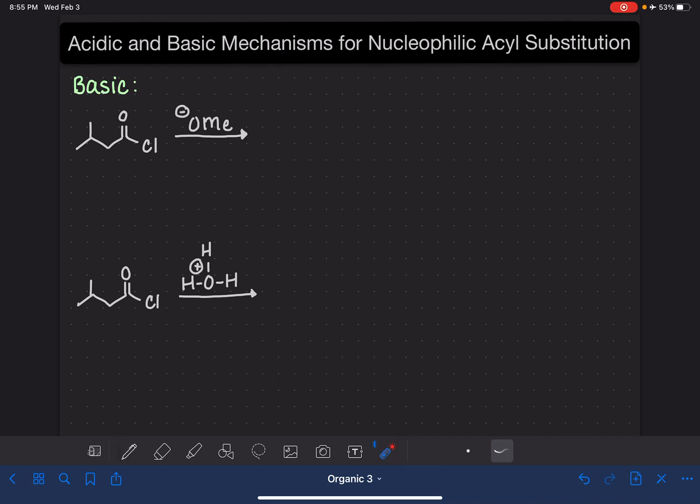For the basic mechanism, I'm going to be using an acid chloride as my example, and the basic nucleophile that we're going to use is the methoxide ion. Whenever we have a basic nucleophile, the nucleophile has got a full-blown negative charge on it. The negative charge of the nucleophile is going to attack the carbonyl carbon, open up the carbon-oxygen double bond, and we will create an intermediate that has a single bond oxygen with a negative formal charge.